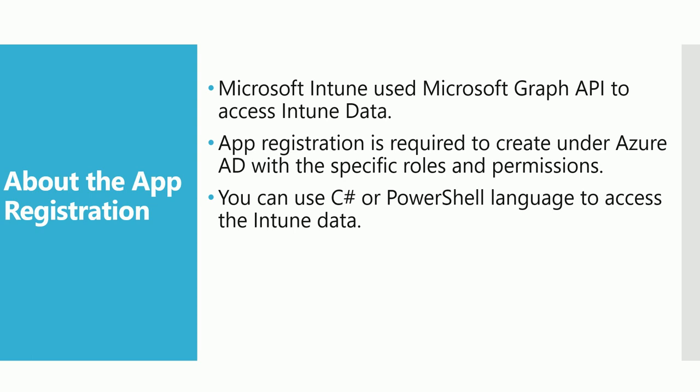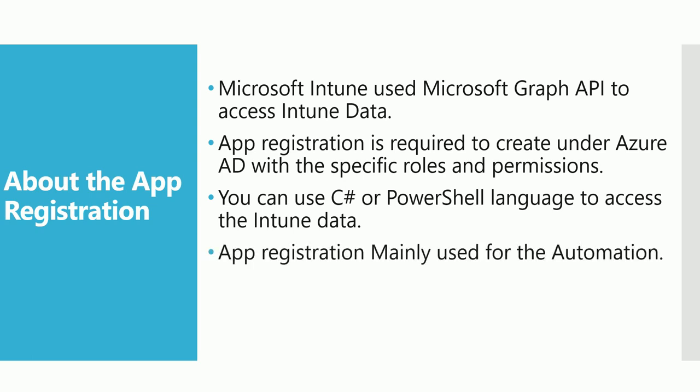These are the programming languages used for automation. This app registration is mainly used for automation — for example, if you need to get a report, or any status like app deployment status, or any type of status from Intune, and you want to trigger an email with that data, you can use the app registration.